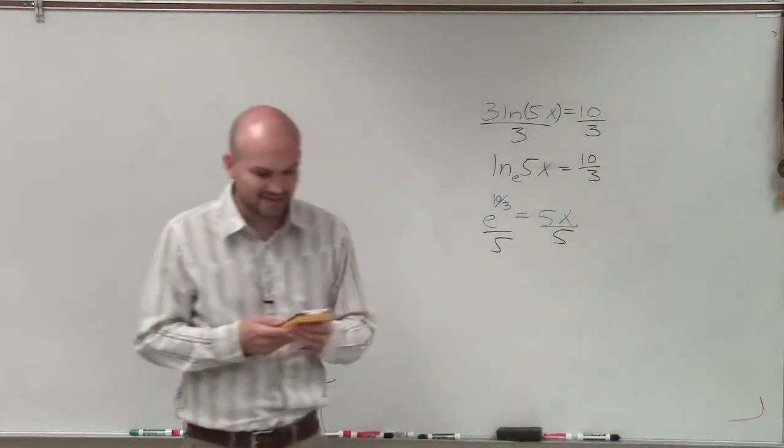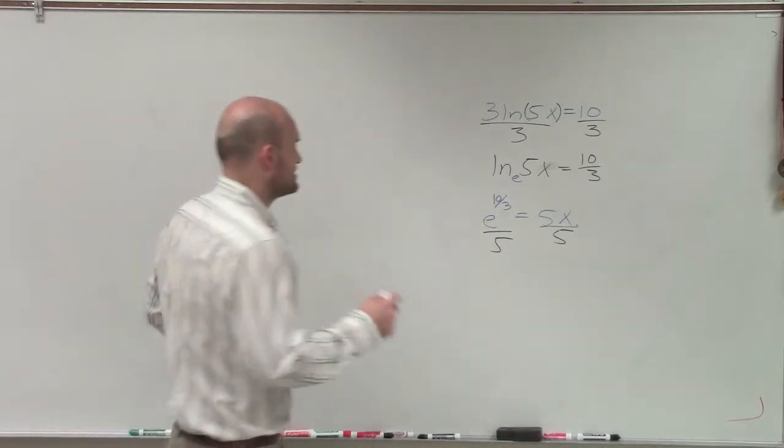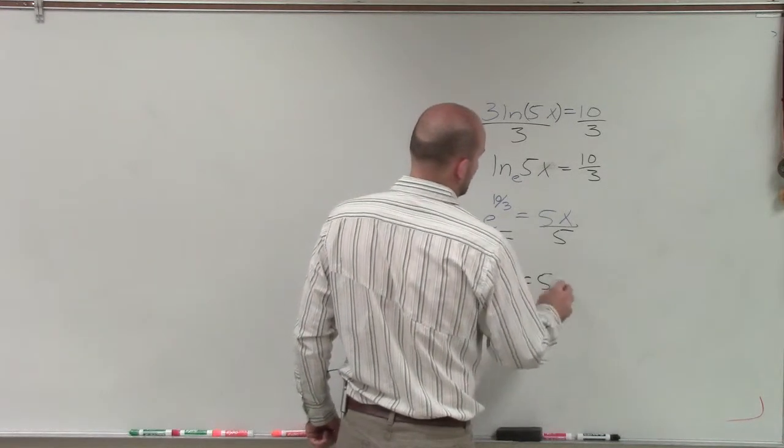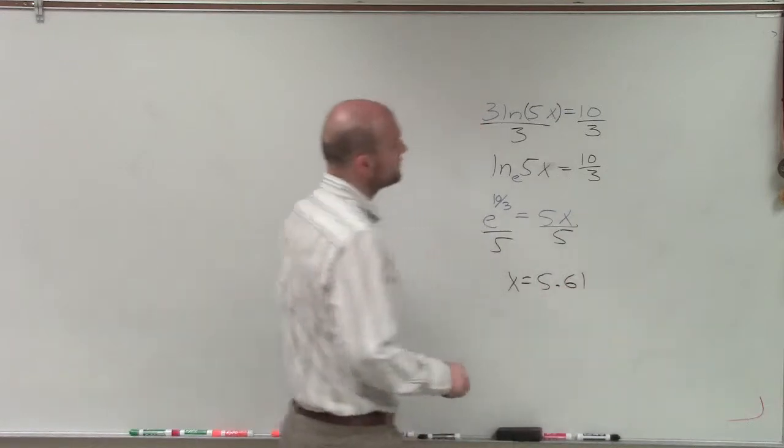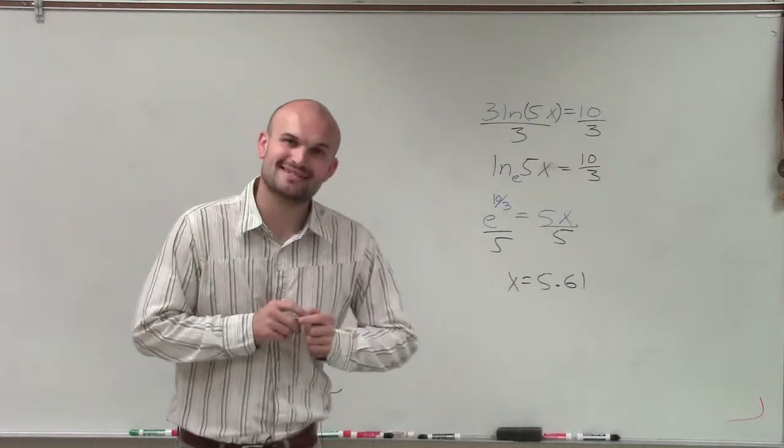And therefore, rounding it, I'll get e is going to be 5.61. So I'm sorry, x equals 5.61. So there you go, ladies and gentlemen. That is how you solve a natural logarithmic equation.